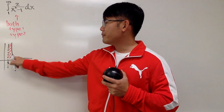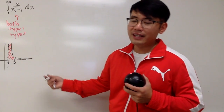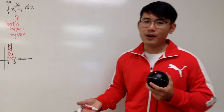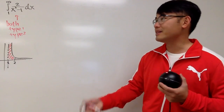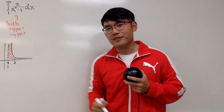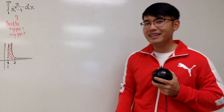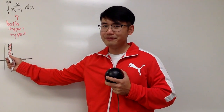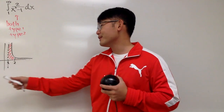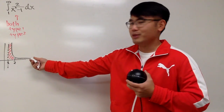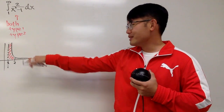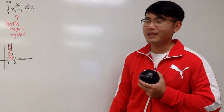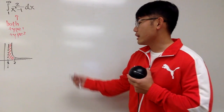If both parts are finite, when you add them up you get a finite value, meaning the integral converges. But if one of them diverges, it doesn't matter what the other one is — if one part diverges, the whole thing diverges.